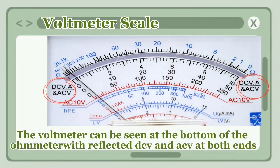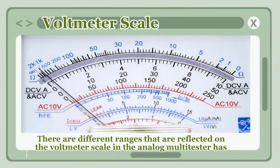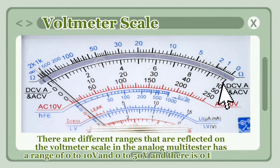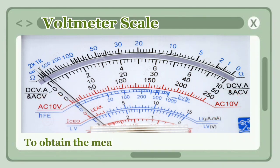There are different ranges that are reflected on the voltmeter scale in the analog multitester. It has a range of 0 to 10V and 0 to 50 volts, and there is 0 to 250 volts. We can also use the ACV 10 scale to obtain the measurement of not more than 10 volts.